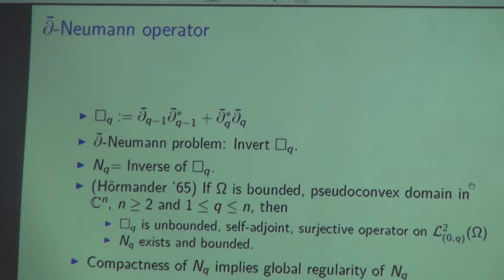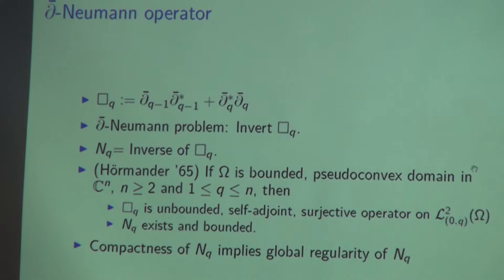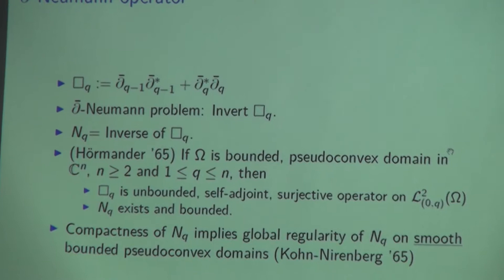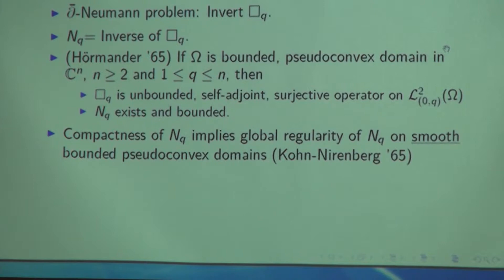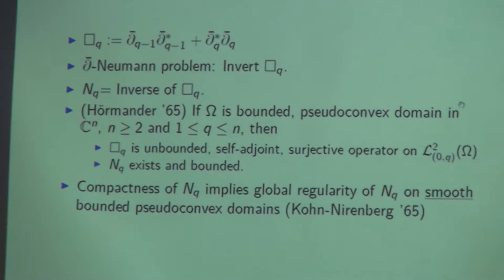We are looking at the compactness of the D-bar Neumann operator because on smooth bounded pseudoconvex domains it implies global regularity. We are interested in global regularity because the D-bar Neumann operator has connections to its PDE, and global regularity has specific properties — for instance, it is related to the global regularity of the Bergman projection, as McNeal stated at the beginning of his talk, and that has some applications to the extension of biholomorphisms. So we want to understand and possibly classify the pseudoconvex domains where compactness holds.